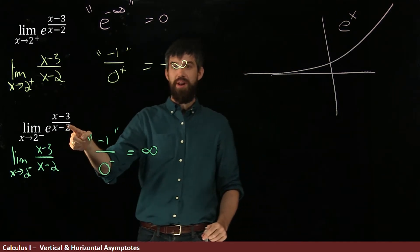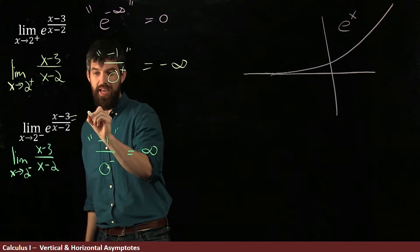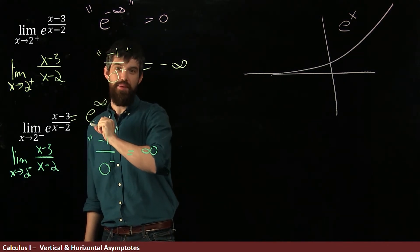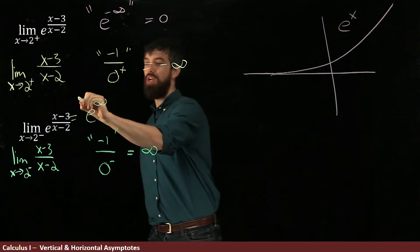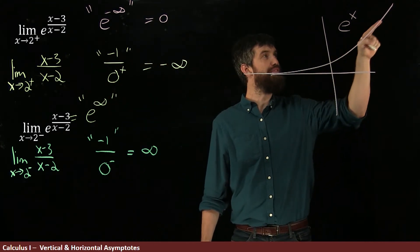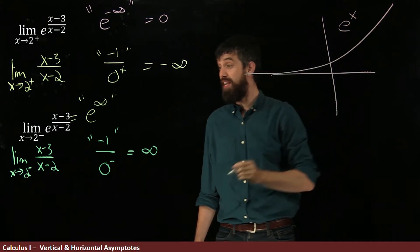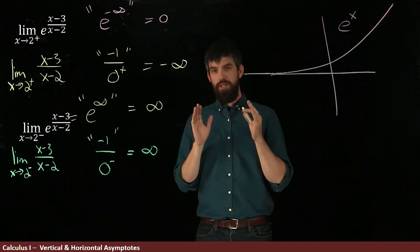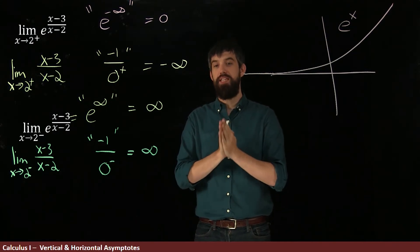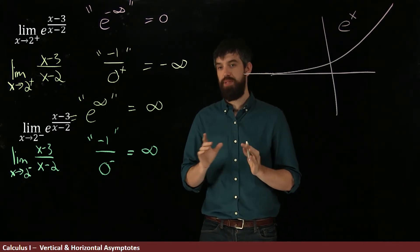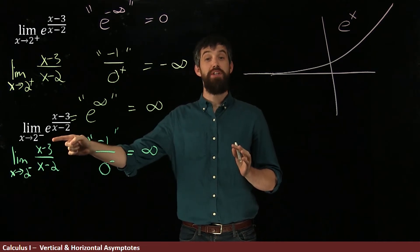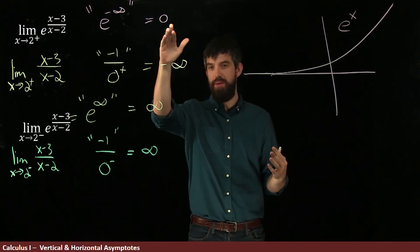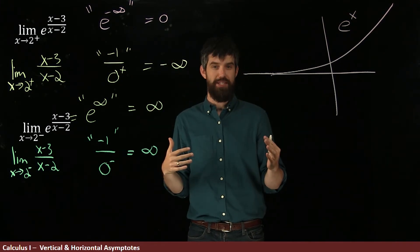The inside went from minus infinity approaching from the right to plus infinity approaching from the left. So when I investigate the outer function, this is e to the power of plus infinity. Looking at the graph of e to the x as we go to positive infinity, it spikes to positive infinity. So indeed this limit is positive infinity. We can claim there is indeed a vertical asymptote at x equals 2 from the left. Even though from the right the limit was the finite number 0, from the left it goes to infinity, so we have a vertical asymptote.